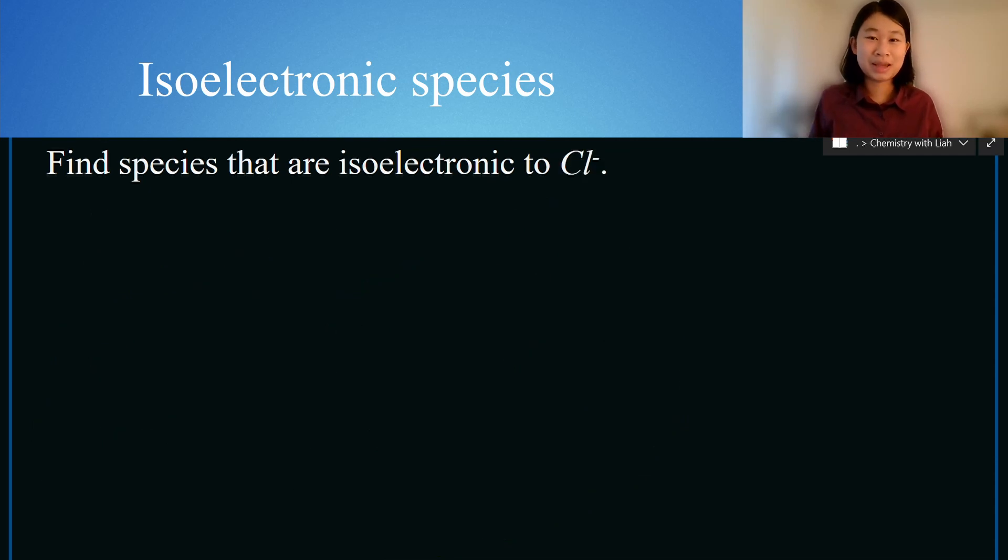Let us do another example. Here we want to find species that are isoelectronic to chlorine minus one. So the Cl minus one atom is going to have a total of 18 electrons.